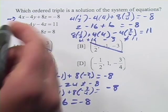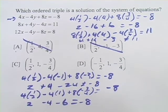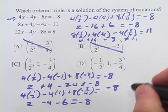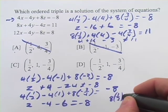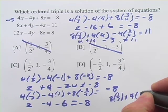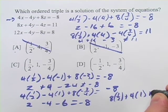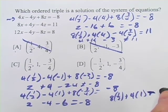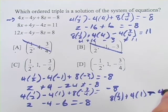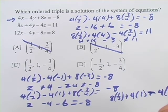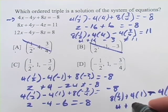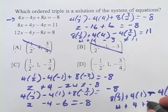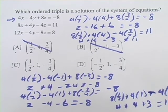We still have to verify the other two. And I'll do one more, and then I'll let you know that C is the right answer. But let's just check the second one. We've got 8 times 1/2, plus 4 times 1, minus 4 times a negative 3/4, equals 11. So that would be 4 plus 4, plus 3, and that indeed is 11.